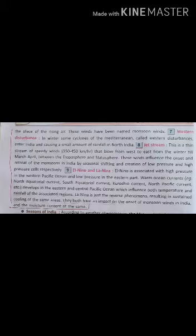7. Jet Stream — the jet stream is a thin stream of speedy winds blowing at 350 to 450 km per hour from west to east, from winter till March–April, between the troposphere and stratosphere. This wind affects the monsoon by creating low and high pressure cells in India.